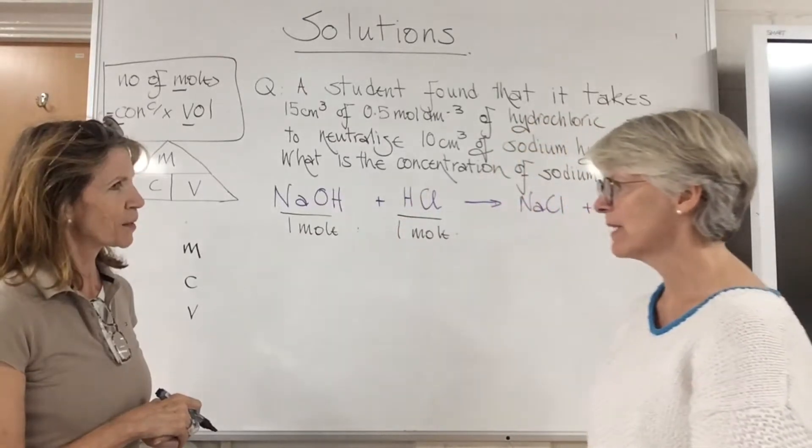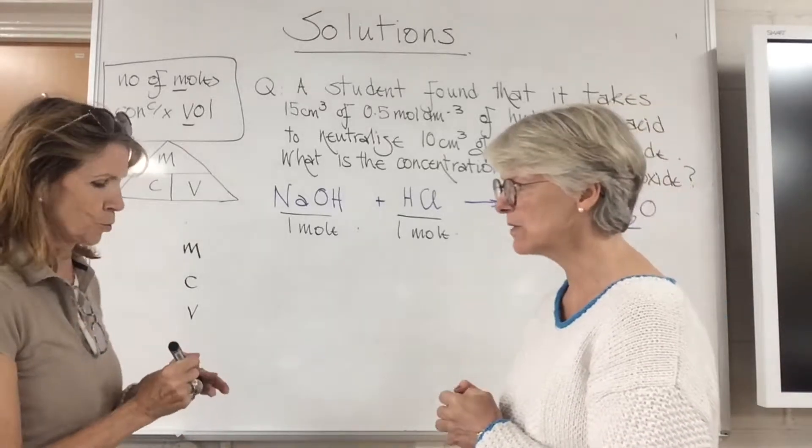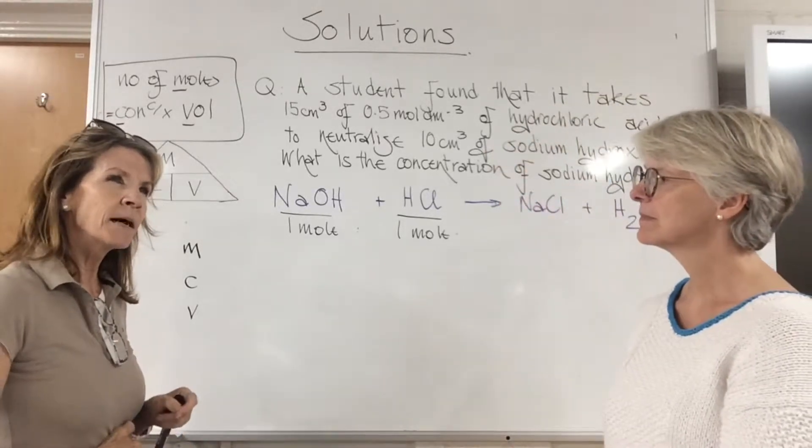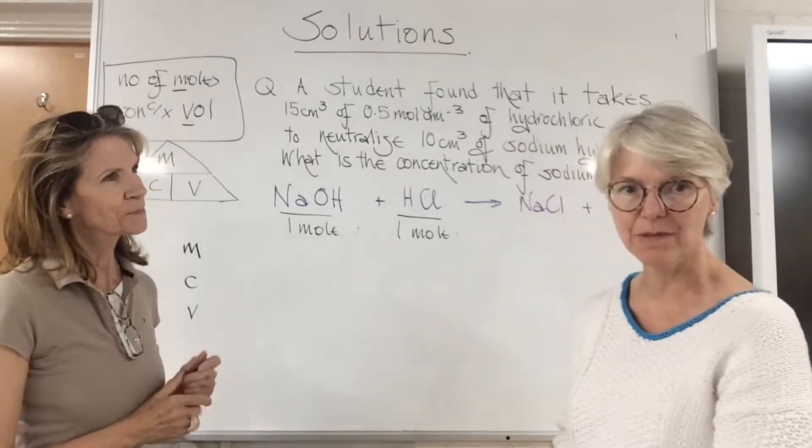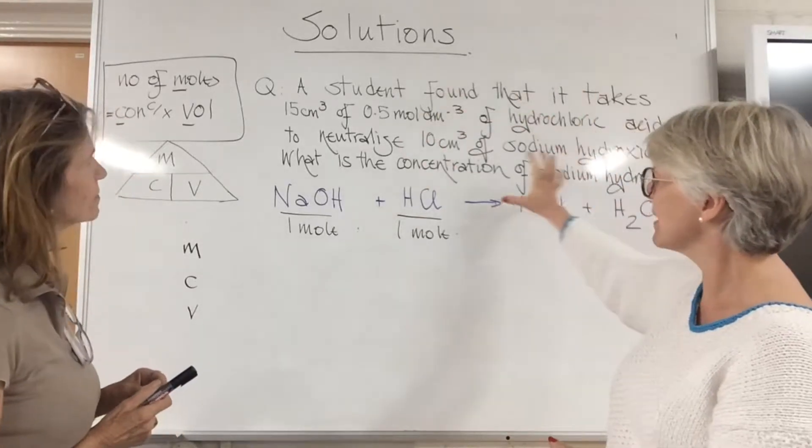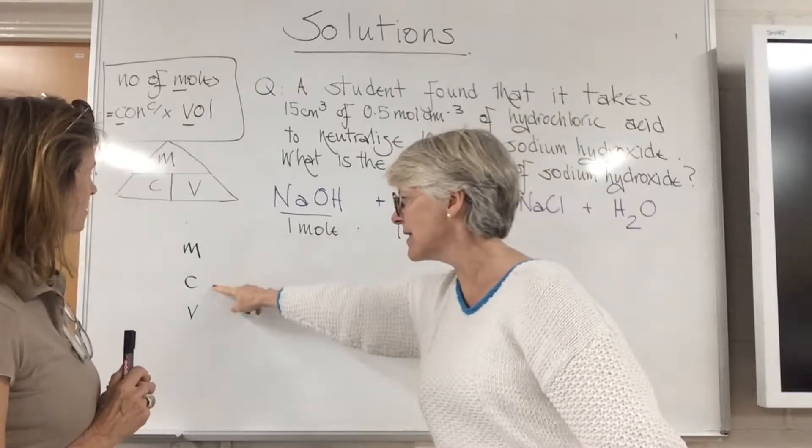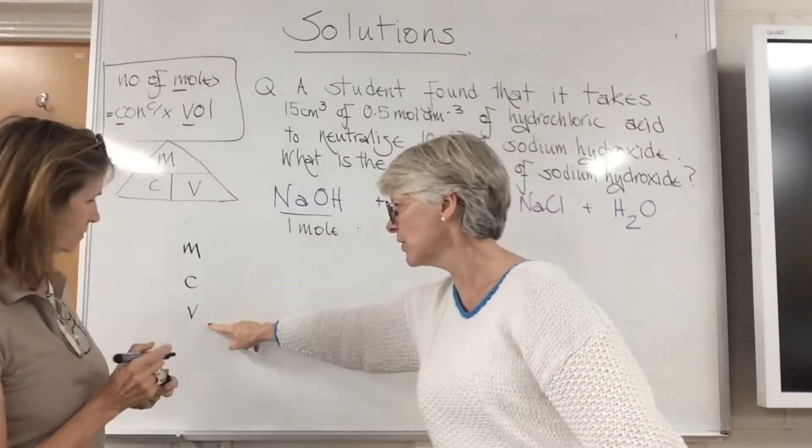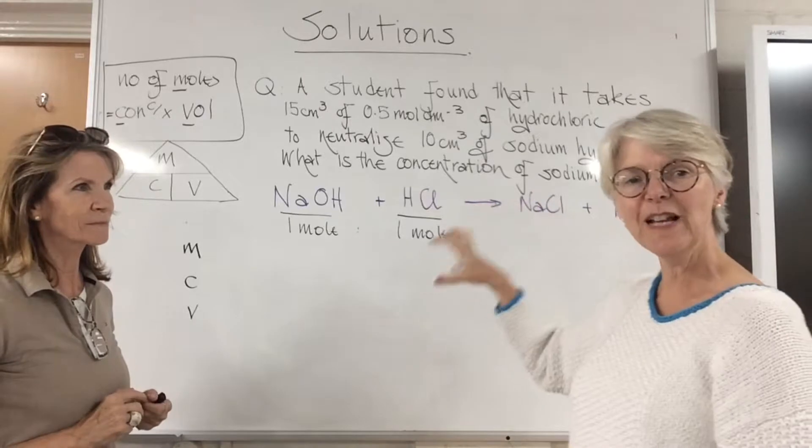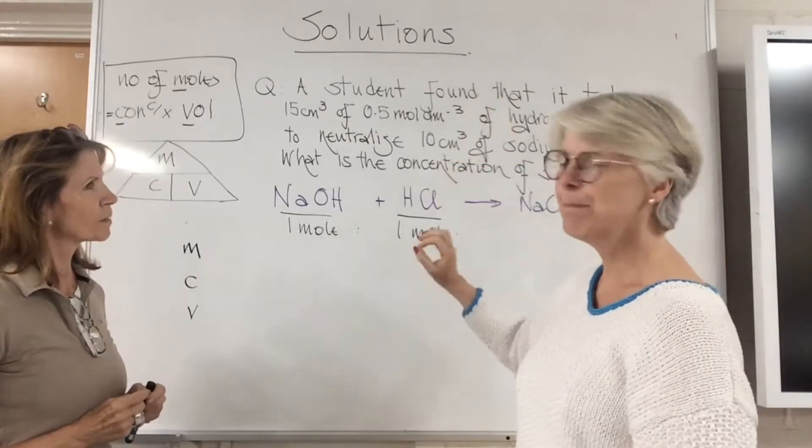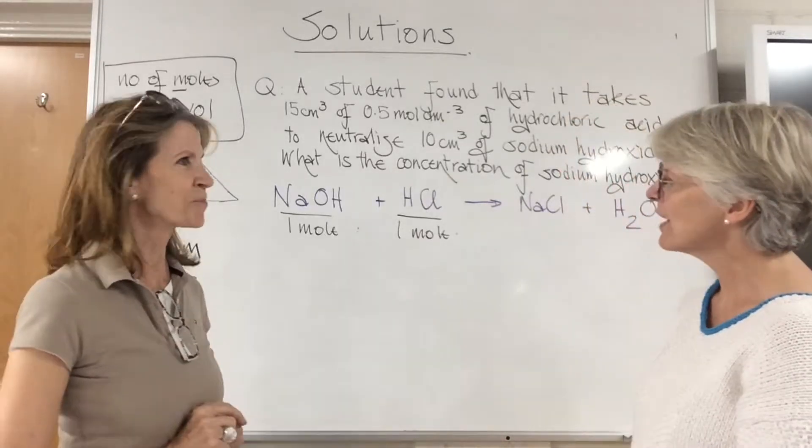The formula we use for working out number of moles is mcv: moles equals concentration times volume. You've got some of the information in the question but not all of it. If you write mcv down the side of the page underneath the chemical equation, you can fill in from the question the bits of information that you've already got.